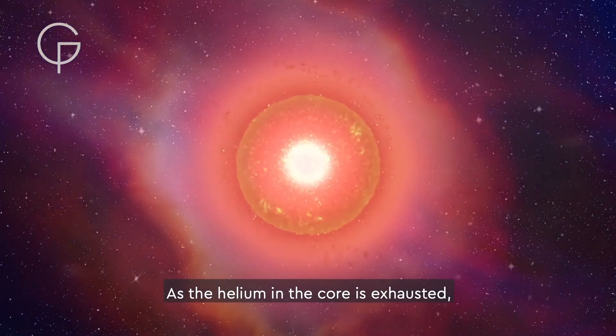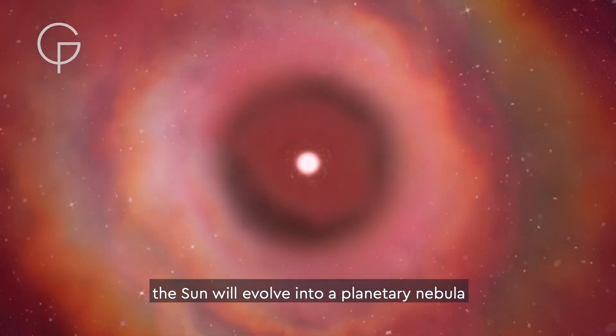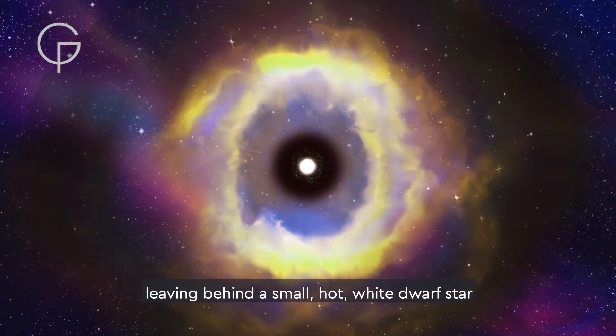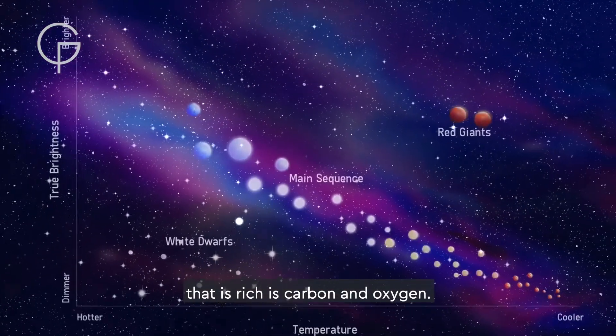As the helium in the core is exhausted, the Sun will evolve into a planetary nebula, blowing off its outer layers, leaving behind a small, hot, white dwarf star that is rich in carbon and oxygen.